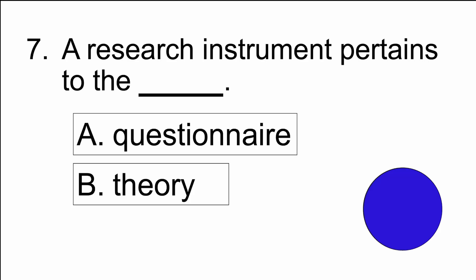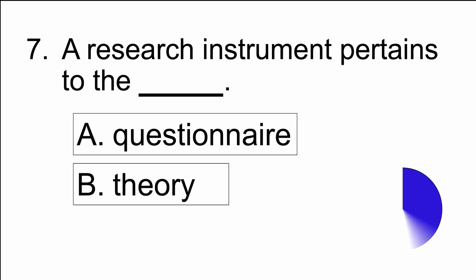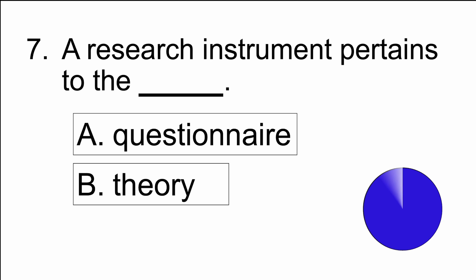Number seven: a research instrument pertains to blank — A) questionnaire, or B) theory. The answer is A) questionnaire.